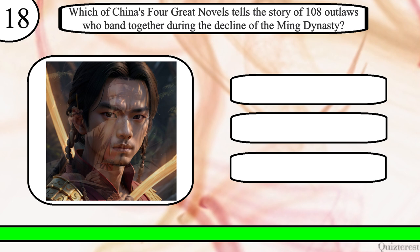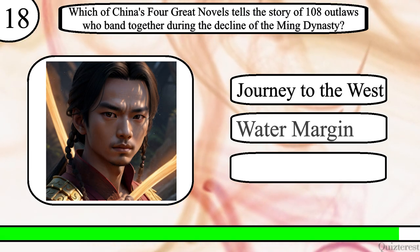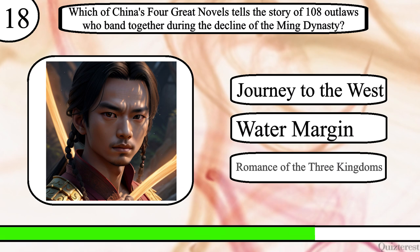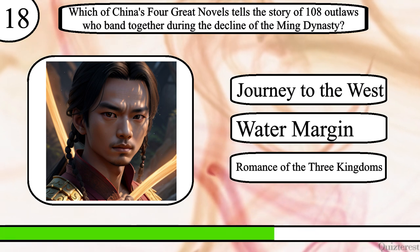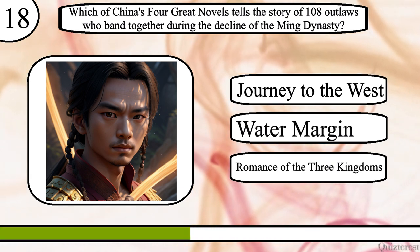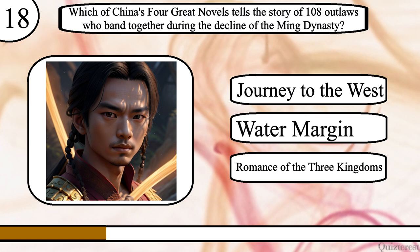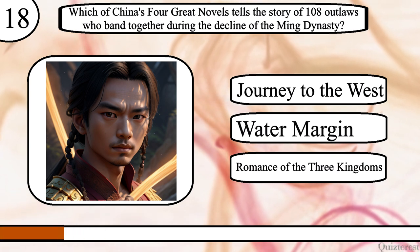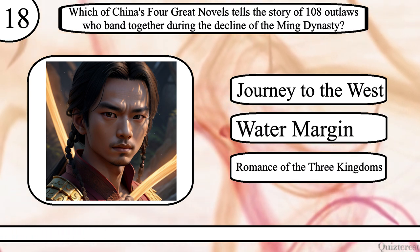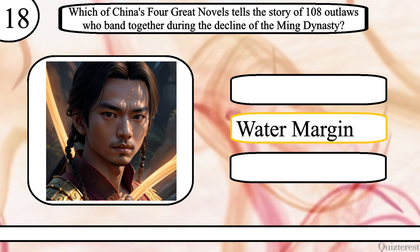Question 18. Which of China's four great novels tells the story of 108 outlaws who band together during the decline of the Song dynasty? Journey to the West, Water Margin, or Romance of the Three Kingdoms? The correct answer is Water Margin.